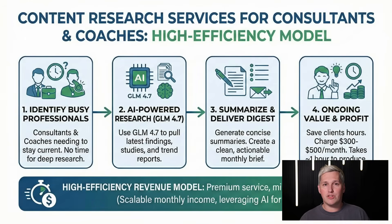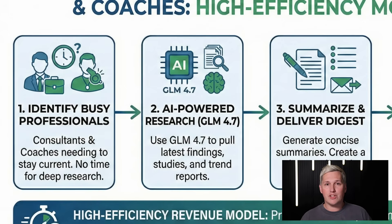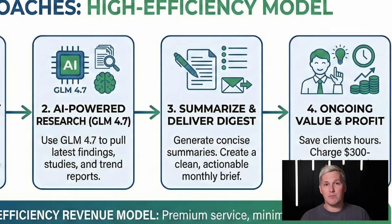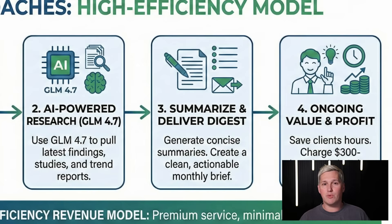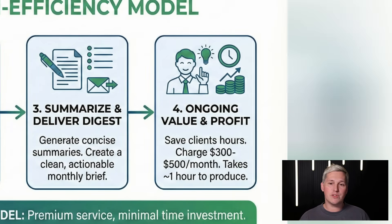Third angle: content research services for consultants or coaches. They need to stay current in their field but do not have time to read every new study or trend report. You offer a monthly research digest where you use GLM 4.7 to pull the latest findings, summarize them, and deliver a clean brief. You charge $300 to $500 per month for something that takes you maybe an hour to produce.